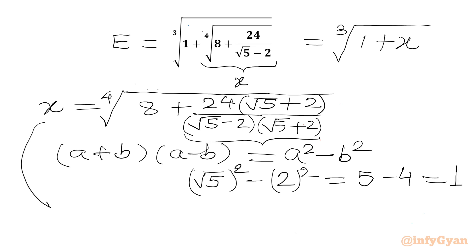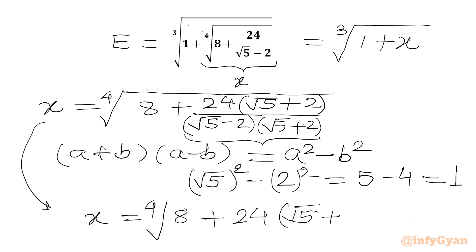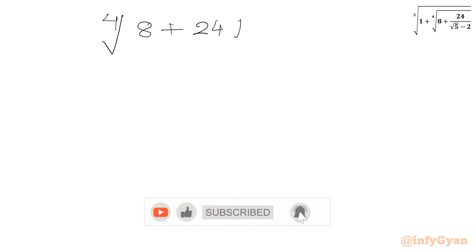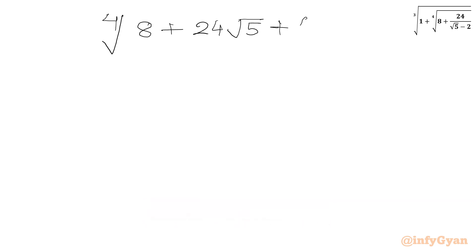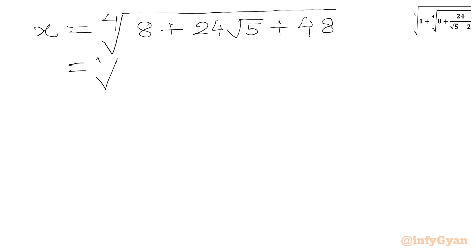So I can write x equal to the fourth root of 8 plus 24 times root 5 plus 2, which gives us the fourth root of 8 plus 24 root 5 plus 48. We can write this as the fourth root of 56 plus 24 square root 5.